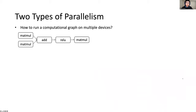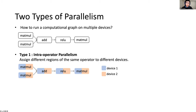In this project, our goal is to unify all these parallelization strategies and build a compiler to automatically generate the optimal combination of them. We summarize the existing parallelization techniques into two types. Consider a computational graph — how can we run it on multiple devices? The first type is intra-operator parallelism: for each node in the graph, we can assign different regions of it to different devices. For example, if we have two devices, they can execute matrix multiplications together, exploiting the inherent parallelism inside a single operator.